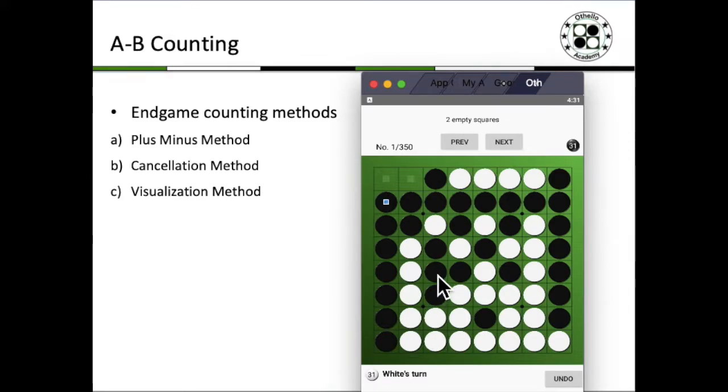A plus-minus method basically means that if White were to play A1, it would be plus-1 disc, and then you expect Black to play B1, which is flipping back this disc, so it's plus-1 and minus-1. In this situation, White doesn't really gain any disc except for the disc that he plays. The final outcome is expected to be 32 to 32.